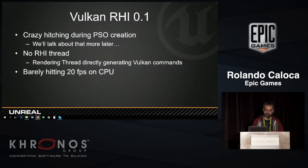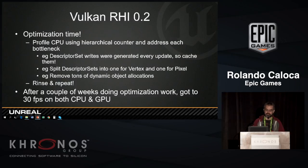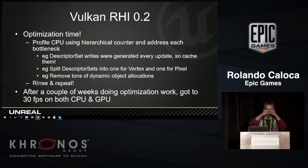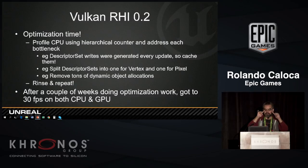Then we started doing optimizations — profiling the CPU with hierarchical counters, and for every bottleneck we found, we'd optimize. For example, we found that descriptor set writes were being generated every update, so we would cache those. We used to have one big pool of descriptor sets and partition vertex and pixel together, but this would cause some drivers to go through the slow path, so instead we split into one set for vertex and one for pixel. We removed a lot of dynamic object allocations, and finally got it to 30 FPS, ready for the demo.